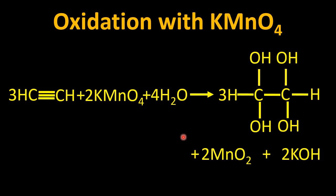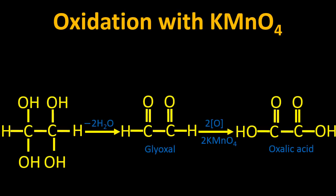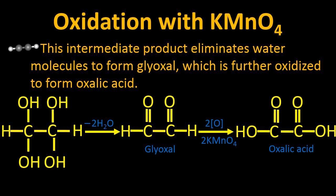Potassium permanganate undergoes reduction and oxidizes acetylene by adding oxygen to it. The product contains adjacent carbon atoms with four hydroxyl groups, and the side products are MnO₂ and KOH. The intermediate product then eliminates water molecules to form glyoxal, which is further oxidized to form oxalic acid. This is how alkynes undergo oxidation with potassium permanganate.